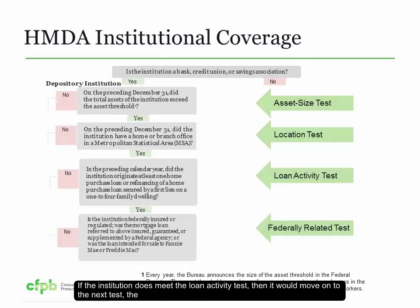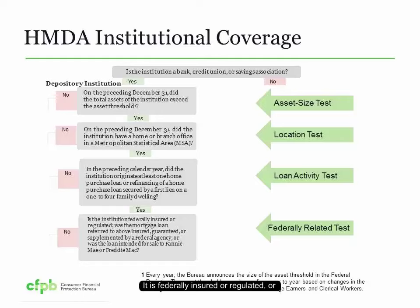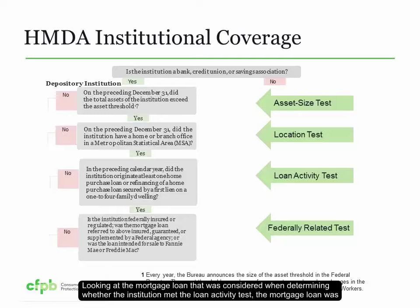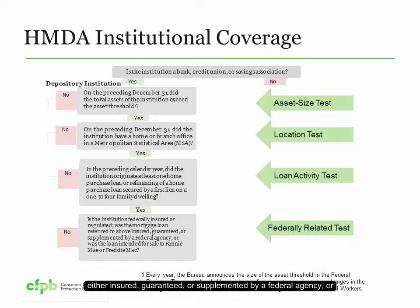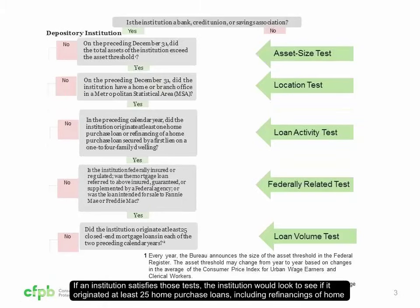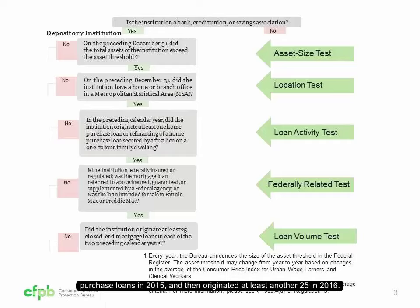If the institution meets the loan activity test, it will move on to the federally related test. Here, the institution would need to meet one of the following: it is federally insured or regulated; the mortgage loan was insured, guaranteed, or supplemented by a federal agency; or the mortgage loan was intended for sale to Fannie Mae or Freddie Mac. If an institution satisfies those tests, the institution would look to see if it originated at least 25 home purchase loans, including refinancings of home purchase loans, in 2015, and then originated at least another 25 in 2016.